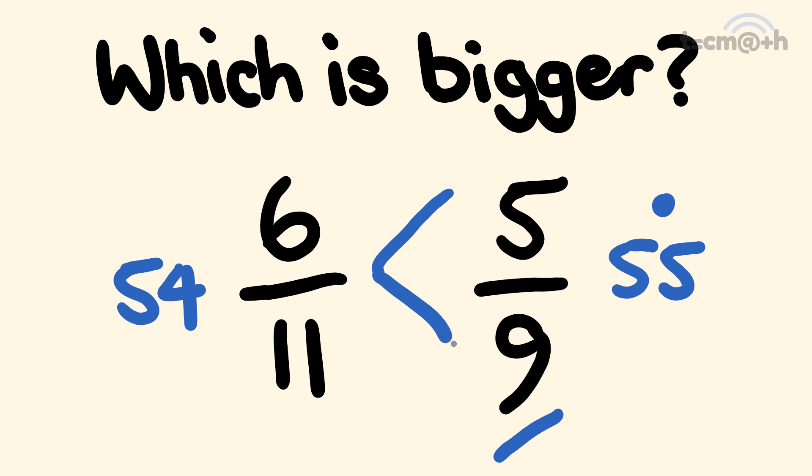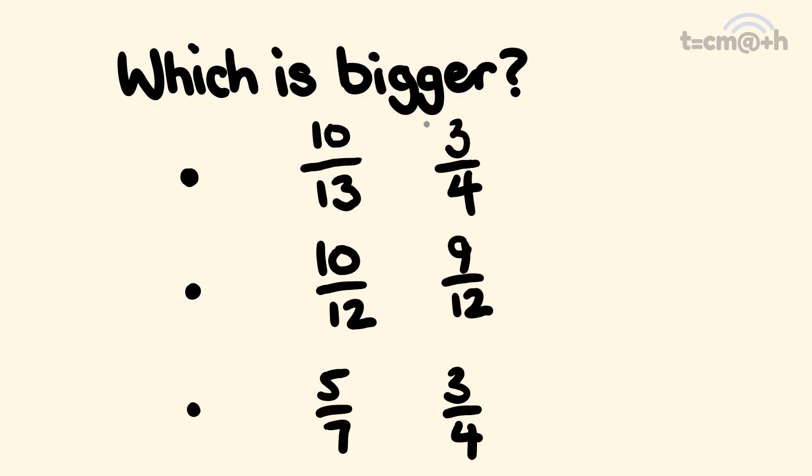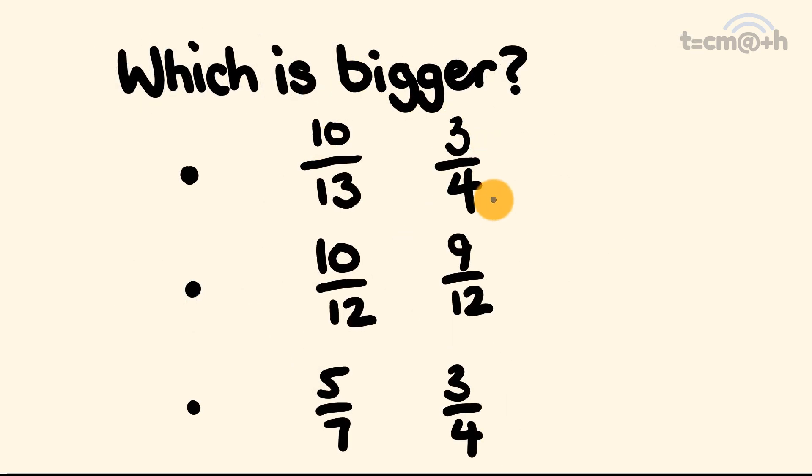So there you go. Really simple, right? What about I give you a couple that you can try right now? Here's three examples. We have three fraction pairs, which is the largest out of each? 10 over 13 and 3 over 4. 10 over 12 and 9 over 12. And 5 over 7 and 3 over 4. Pause the video and give these a go.